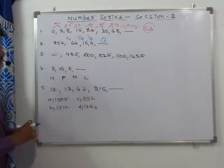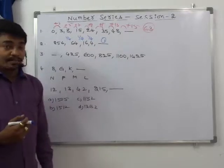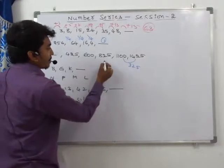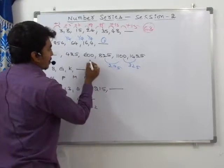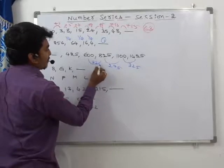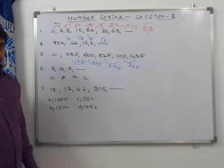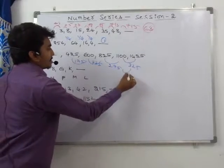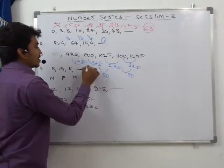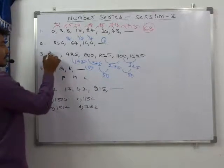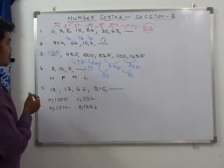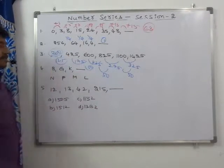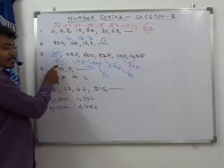For question 3, based on difference analysis: first differences are 225, 275, and 175. The second differences are all 50, so the pattern is constant second difference. Adding 300 (175 + 125? — next first difference would be 300), so 125 + 300 = 425, and 425 + 175 = 600... The answer resolves to 425.